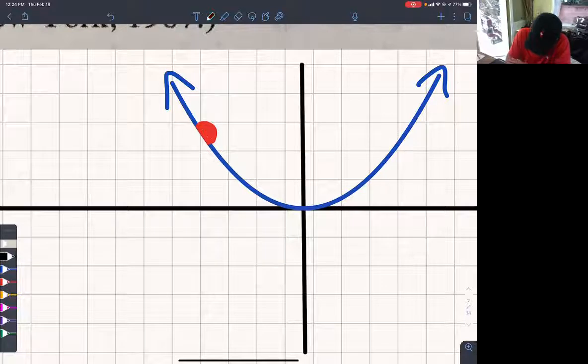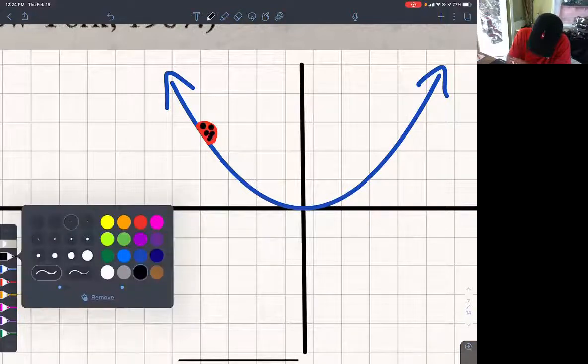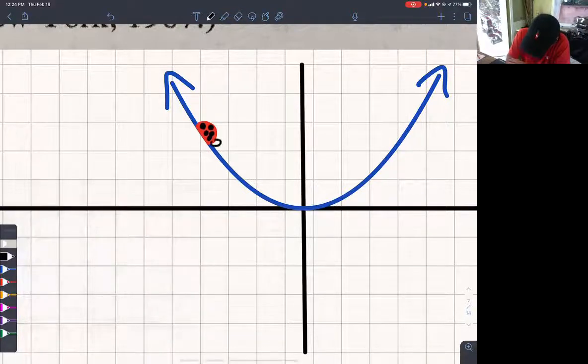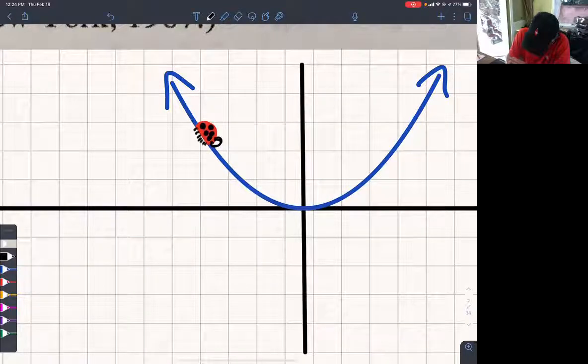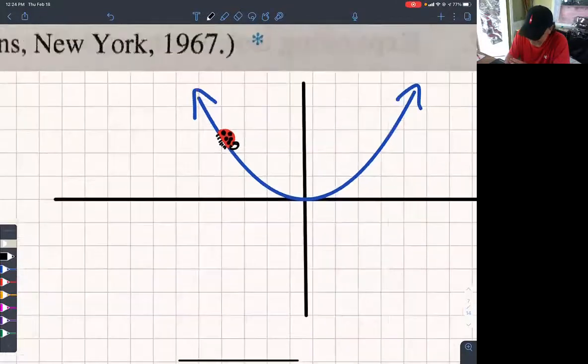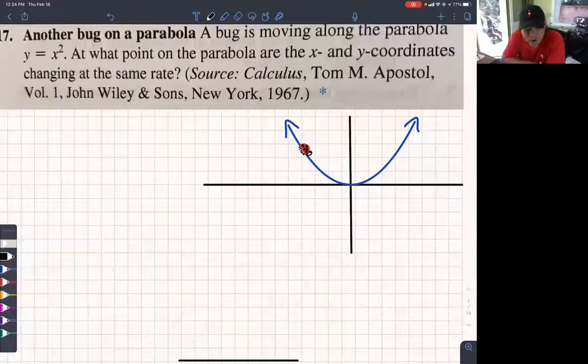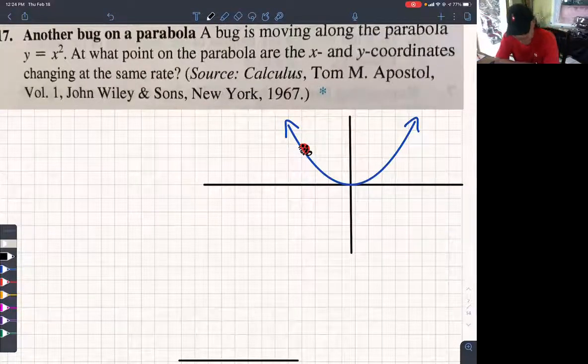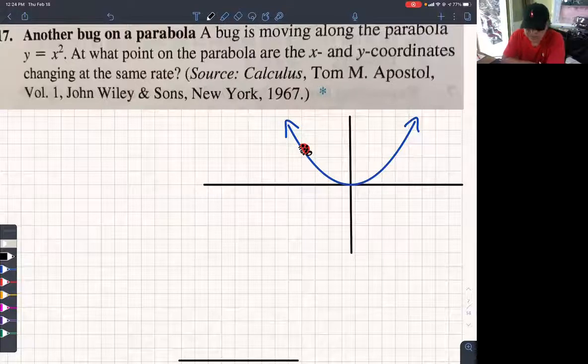And this ladybug's going to have black spots and a head. Are their heads black? I don't know what color the head of a ladybug is. How many feet do they have? That's a cute ladybug. Yeah? I like it. Okay. It's crawling on this parabola, this parabolic wire or something.